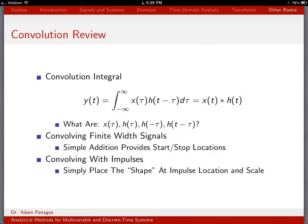Let's spend some time reviewing the convolution integral. The convolution integral is written as y(t) equals an integral from minus infinity to infinity of x(τ) times h(t minus τ) dτ. The shorthand notation for that is x(t) convolved with h(t), where the convolution symbol is the star.